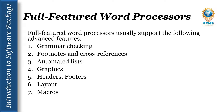Footnotes and cross-references automate the numbering and placement of footnotes and enable you to easily cross-reference other sections of the document. Automated list automatically creates bulleted and numbered lists, including multi-level outlines. Graphics allow you to embed illustrations, graphs, and possibly even videos into the documents.